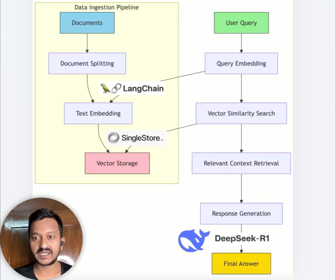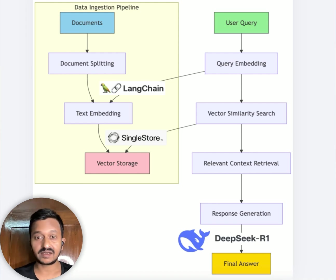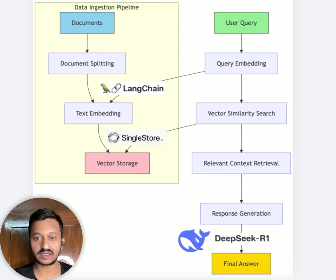Hey guys, so we all know how DeepSeek is becoming popular because of its recent model, DeepSeek R1. Because of that, I saw many people wanting to build AI applications and RAG systems around the DeepSeek R1 model. So in this video, I'm going to show you how we can build a simple RAG system using DeepSeek's R1 model, LangChain, and SingleStore as our vector database.